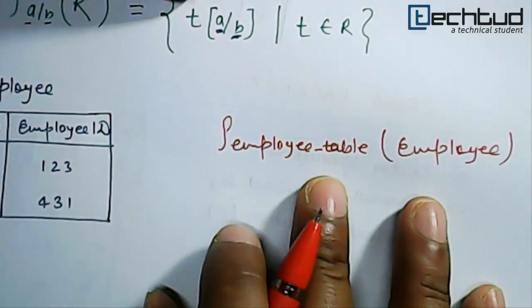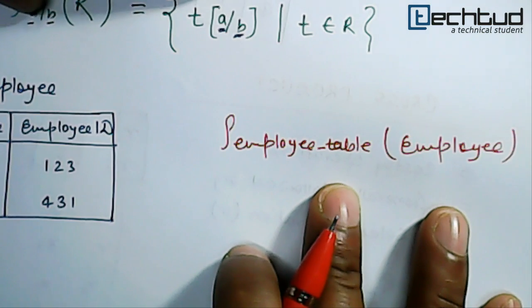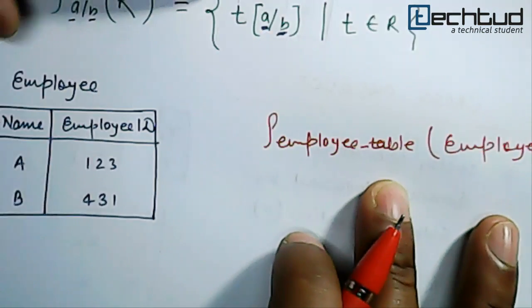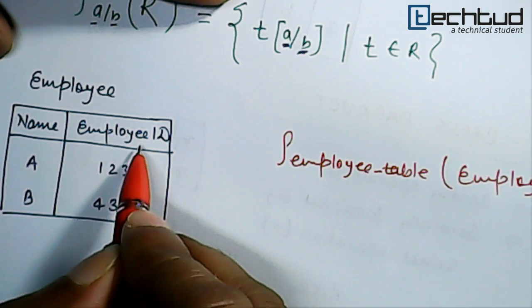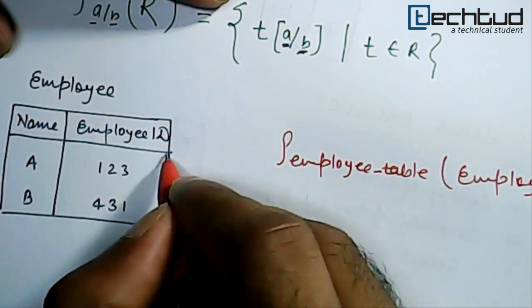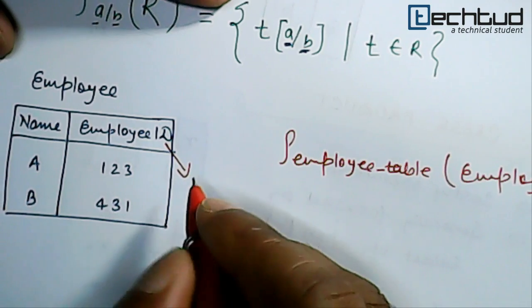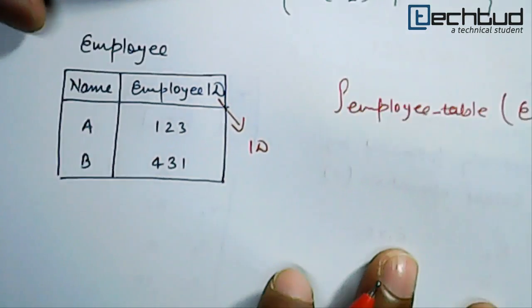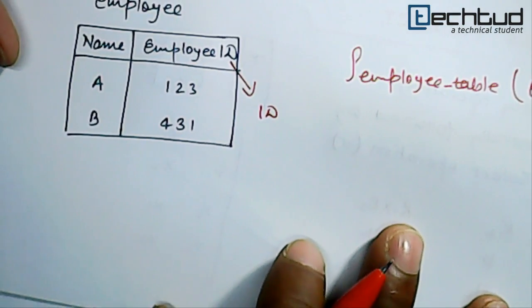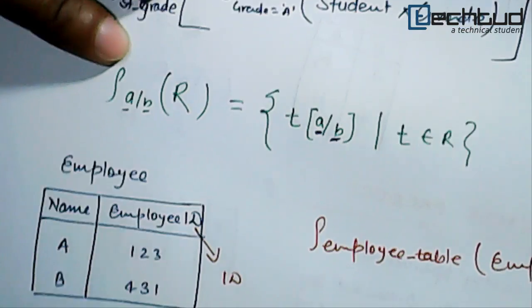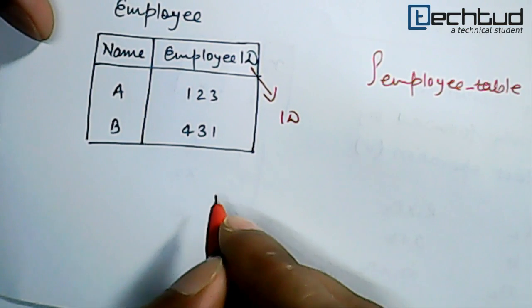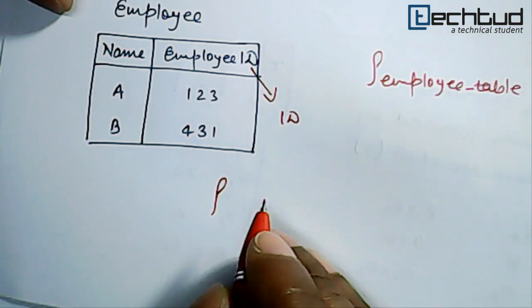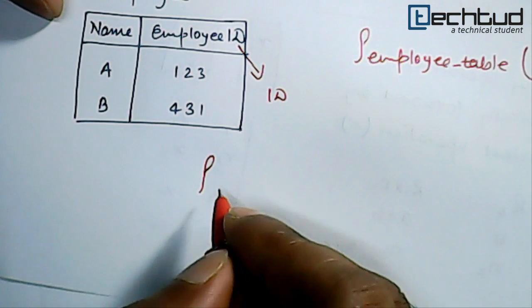So here the table name itself will be renamed. Now, if I want to rename EmployeeID as ID only, then what will we do? In that case, we will write this operator sign rename, and ID - that is, I want to rename which attribute? EmployeeID.